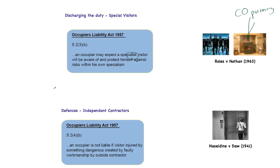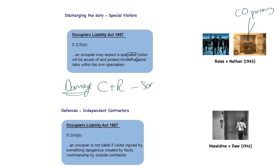Regarding damage — causation and remoteness — once duty and breach are established, you must show the defendant caused the loss and the loss is not too remote. These are the same rules as for standard negligence.